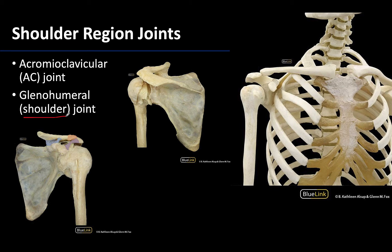A quick review regarding bony articulations. The acromioclavicular joint is formed by the articulation of the acromial or lateral end of the clavicle and the acromion of the scapula, forming a plain joint where slight movements occur. Conversely, a wide range of movements can occur at the ball and socket glenohumeral joint, which is formed by the socket — the glenoid fossa of the scapula — and the ball, which is the head of the humerus.